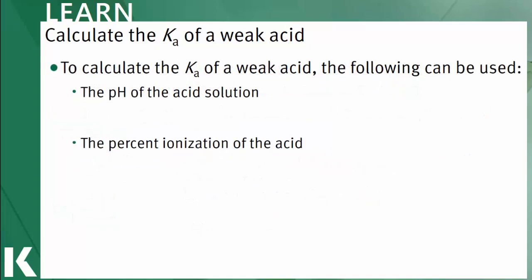There are two methods for calculating Ka, depending on the information given. If the pH of the solution and the initial concentration of the acid is given, then you can calculate the Ka by setting up an ICE table, then using the equation for calculating the hydronium ion using the pH value, and finally plugging the numbers into the Ka expression. I would recommend pausing here and going to the video lessons on ICE tables if you haven't reviewed that information yet, since they are integral to the calculations required for Ka.